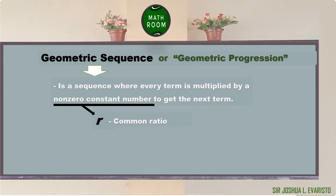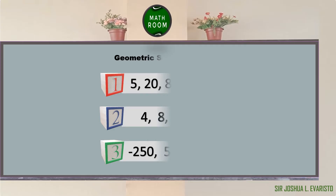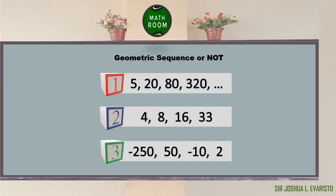The common ratio is denoted by the small letter r. Geometric progression can be classified as a finite geometric sequence or an infinite geometric sequence. Let's have some examples — we will determine which of the following sequences are geometric sequences and which are not.